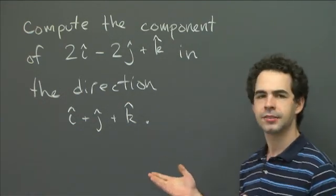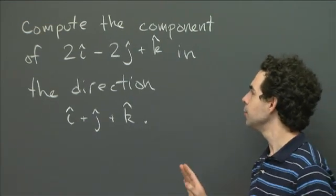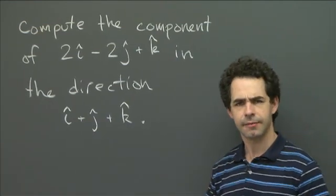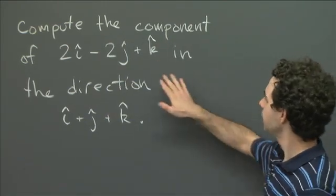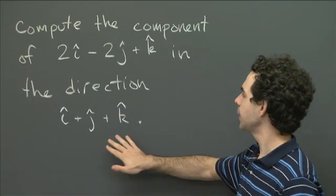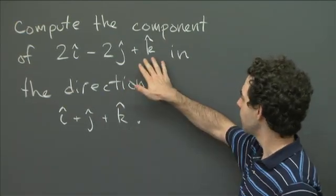Now, this problem is pretty straightforward. Really, all you have to do is remember what the definition of component is. And after that, it's smooth sailing. So in particular, the component of one vector in the direction of another is the length of what you get when you project this vector onto that one.